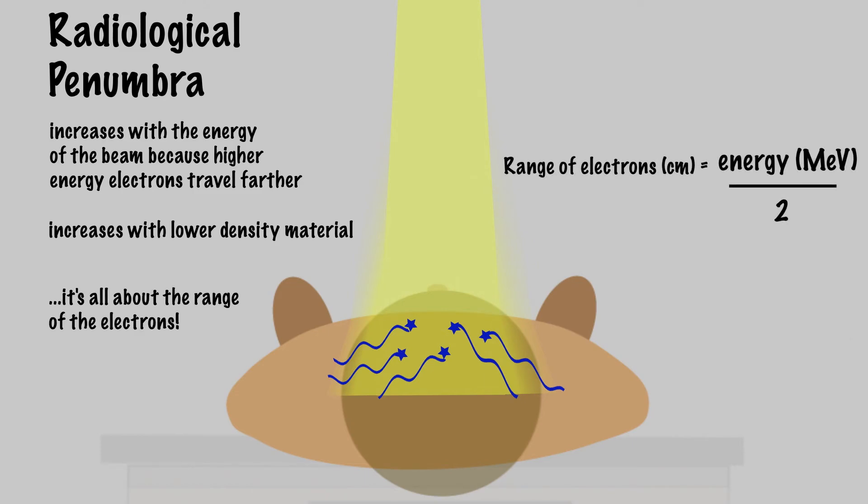The range of electrons in soft tissue is about the energy in MeV divided by 2, and that will give you the approximate range in centimeters.